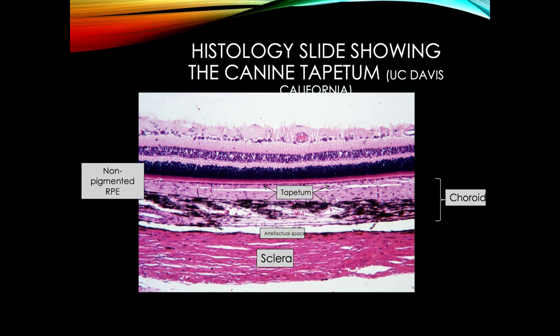Histologically, we can now see the red blood cells present within the choroid proper. We've got the tapetum which we class as part of the choroid, the connective tissue of the sclera, and all the retinal layers we've already covered on top.